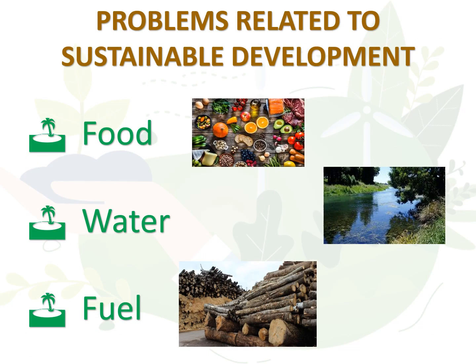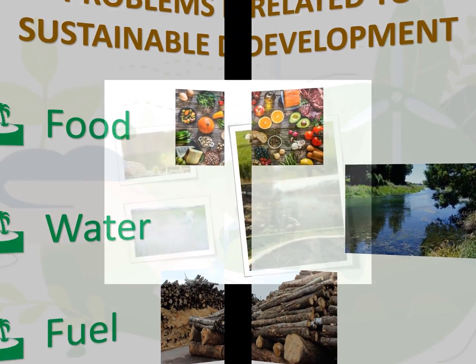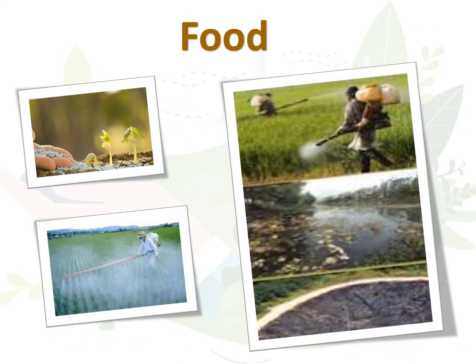Problems related to Sustainable Development. Three major problems related to sustainable development are food, water, and fuel. Food: The amount of rich fertile land needed to grow crops such as wheat, rice, etc. is becoming less as we are using up more and more land for other purposes. Soil nutrients are also getting depleted and lots of chemicals are spoiling the soil due to use of chemical fertilizers.